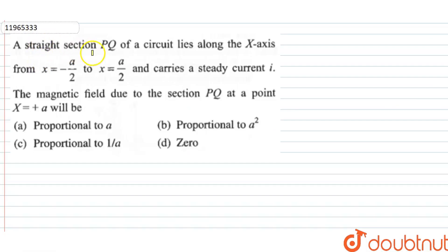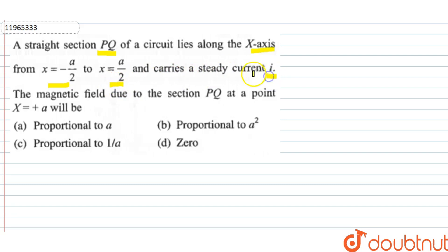This question states that a straight section of a circuit lies along the x-axis, from x equal to minus a/2 to x equal to a/2. It carries a steady current i. We are asked: what is the magnetic field due to this section PQ at a point x equal to plus a, proportional to?